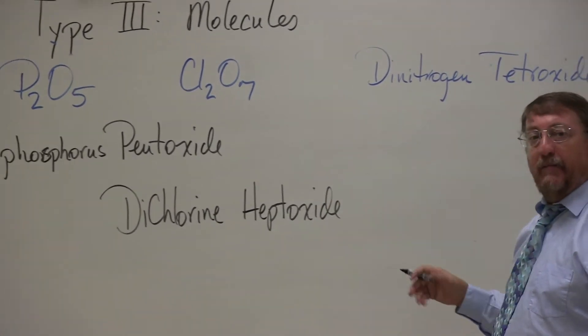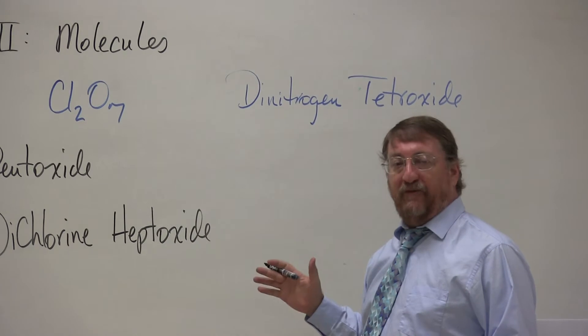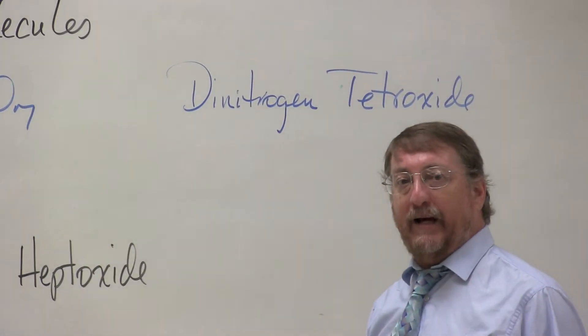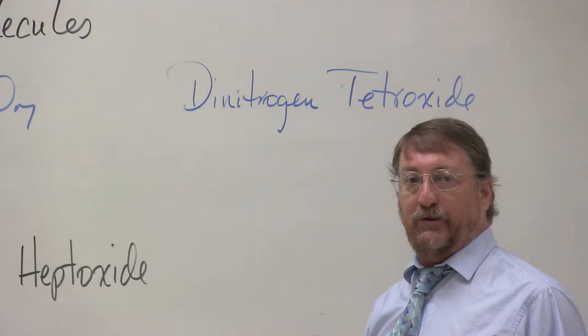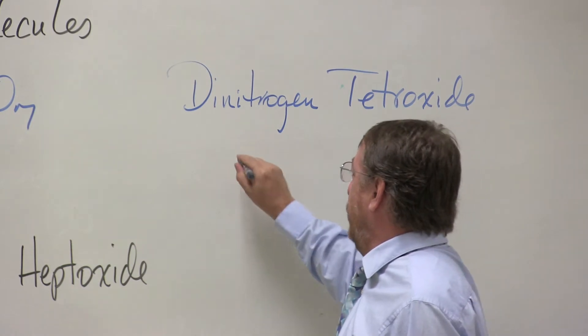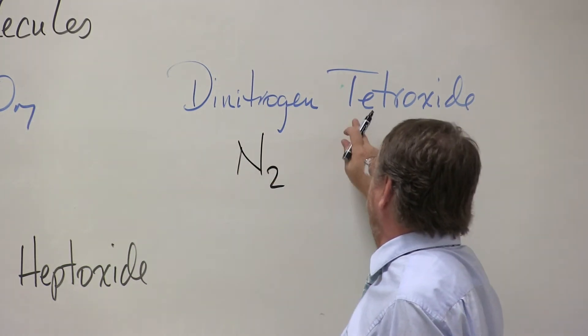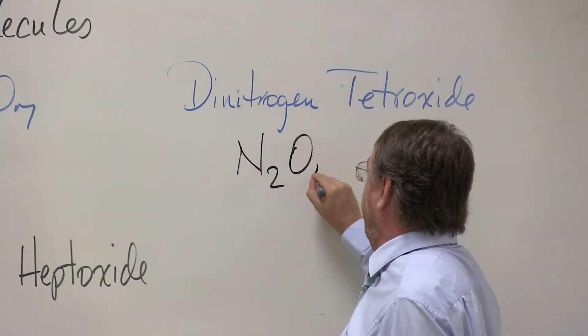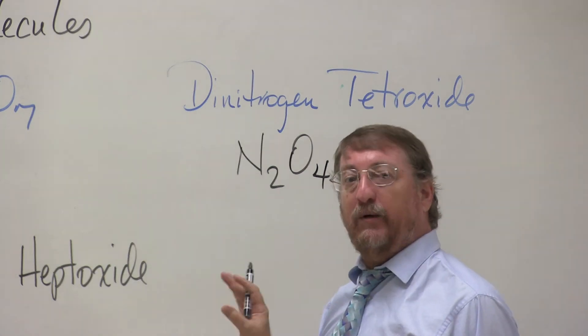Now, if we have the name, I'm going back to the formula. Remember, the prefixes are telling us how many atoms, not the number of charges. So dinitrogen means two nitrogens. Tetroxide means four oxygens. It's that simple. Keep it simple.